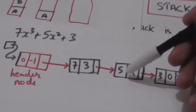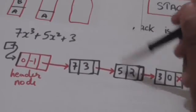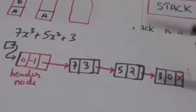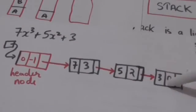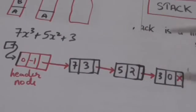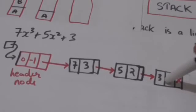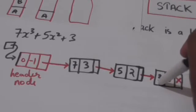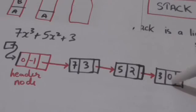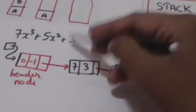Similarly, this node represents the term 5x² and this node represents the term 3. Here the coefficient is 3 and the power of variable x is 0.